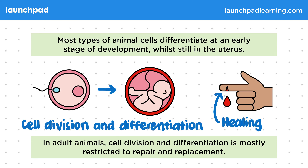You need to be able to explain the importance of cell differentiation in animals. So now we know that animal cells differentiate at an early stage of development.